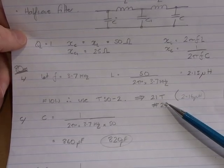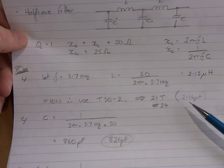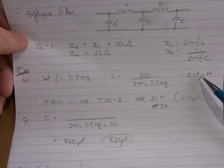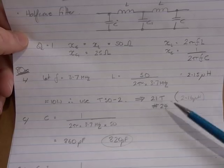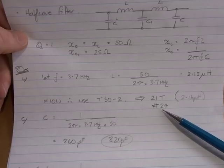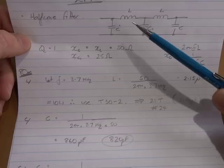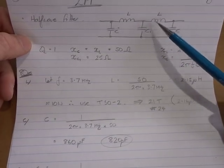Now for a T50-2, 21 turns on that will give us 2.16 microhenries, which is close enough to our 2.15, and I'll be using—again, because it's only 10 watts—I will use number 24 gauge wire for that. So that's going to be the inductors, those two inductors there for the 80 meter band.